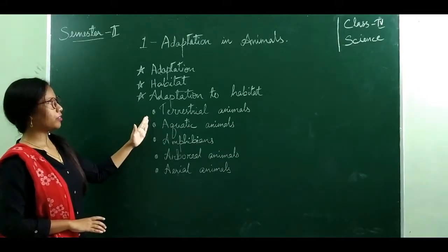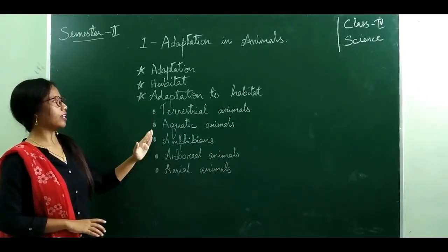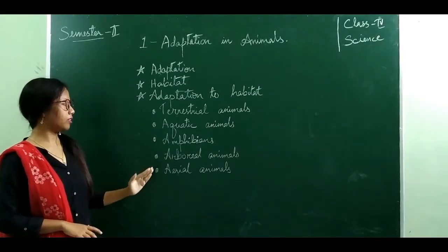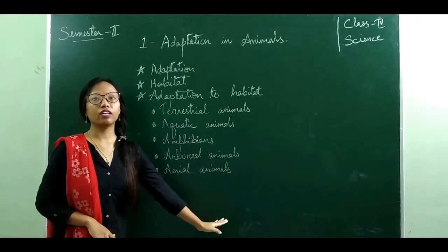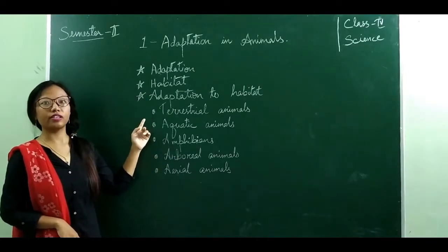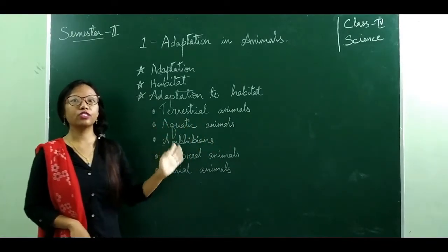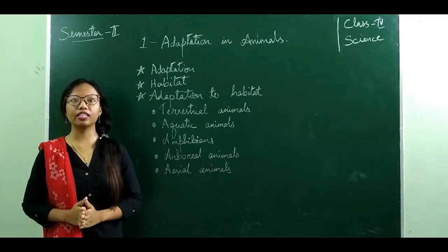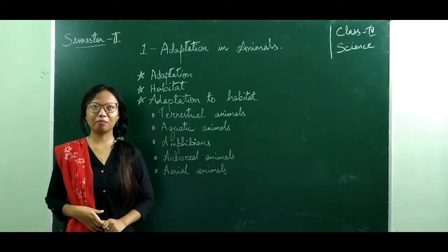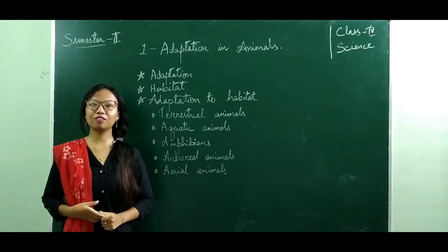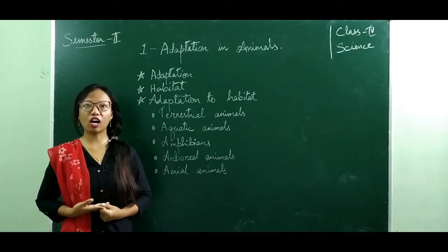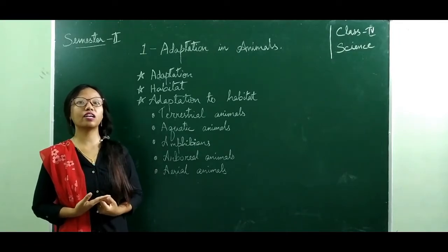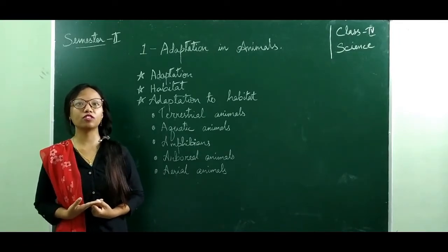Let's learn how animals living in different habitats are adapted to the conditions there. First we have terrestrial animals, then aquatic animals, then amphibians, arboreal animals, and aerial animals. Terrestrial animals are those animals that live on land — for example, elephants, horses, cows, snakes, bears, etc.